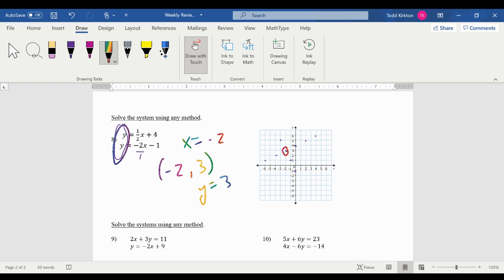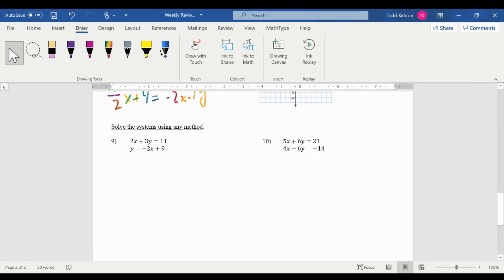The other way you could do it if they're both solved for y is substitution. And you could set the two equations equal to each other because they're both equal to y. Again, solve the system using any method. If y is by itself, substitution is a good method. So I rewrite the first equation. And I substitute negative 2x plus 9 in for y. And distribute. So that's negative 6x plus 27 equals 11.